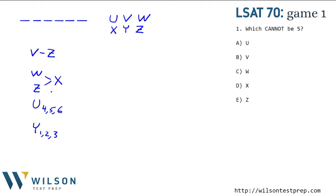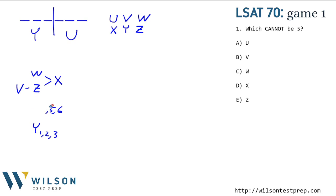So let's combine conditions where we can. We have V before Z, which is before X, so we can just put V→Z→X, and that covers the V before Z condition. And now U in the last three and Y in the first three. I'd like to just make a line showing Y is one of these first spots and U is one of these last spots, and put that information up with our game board. Now we're ready to answer the questions.